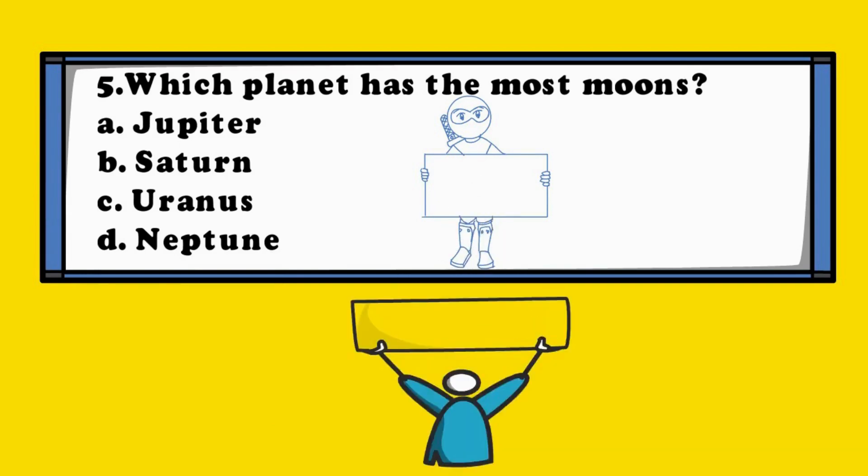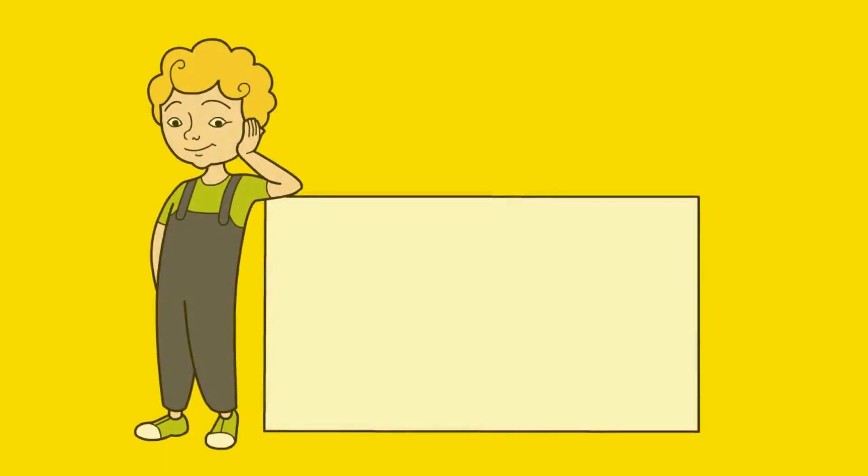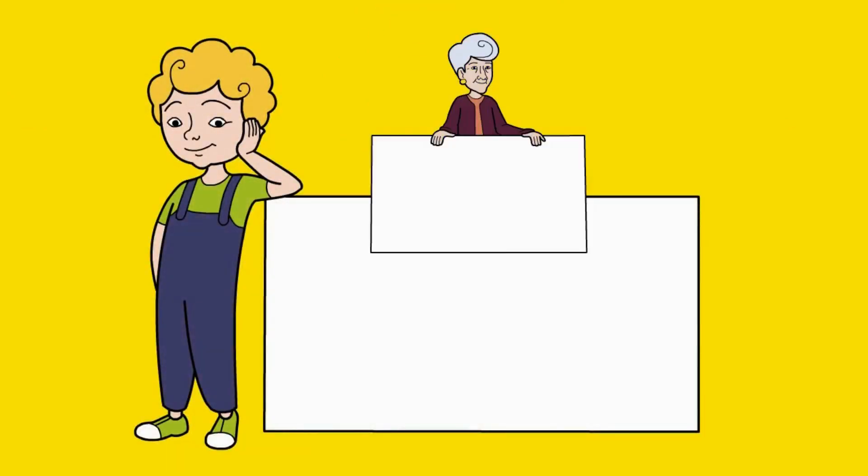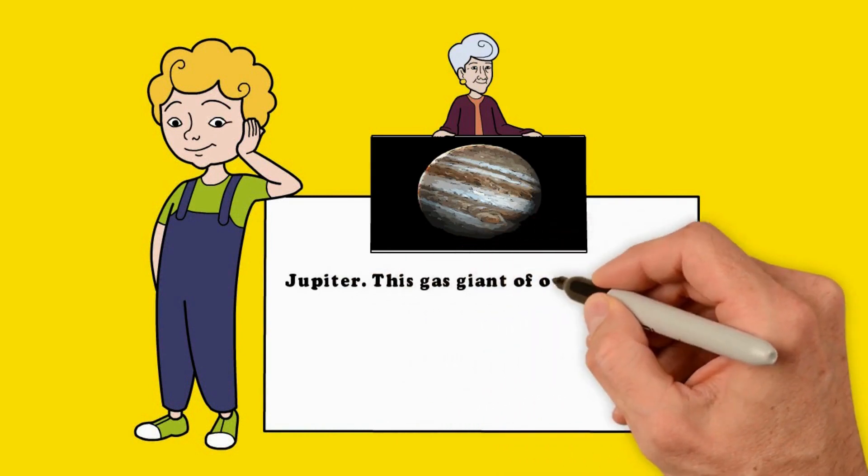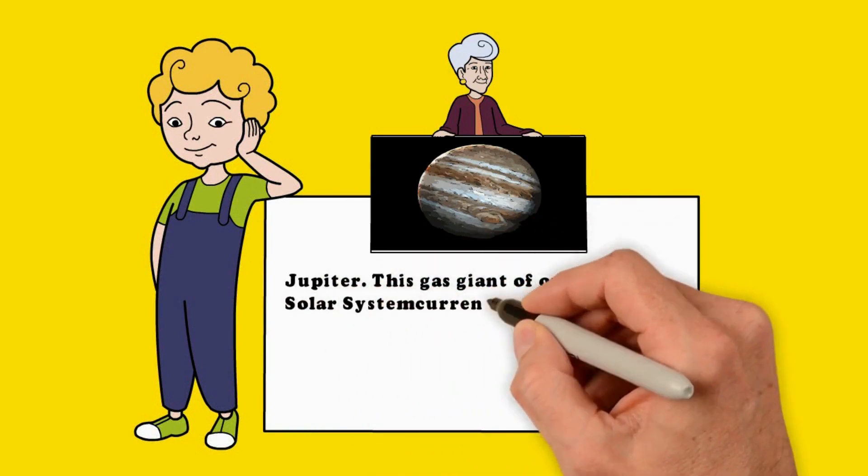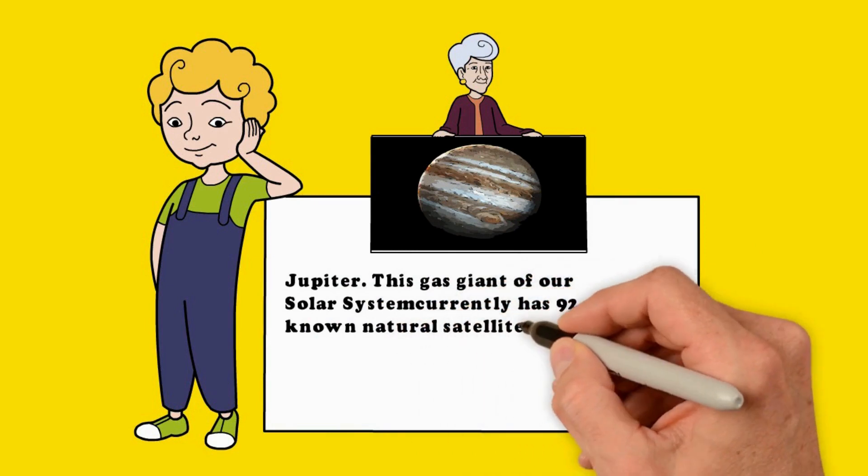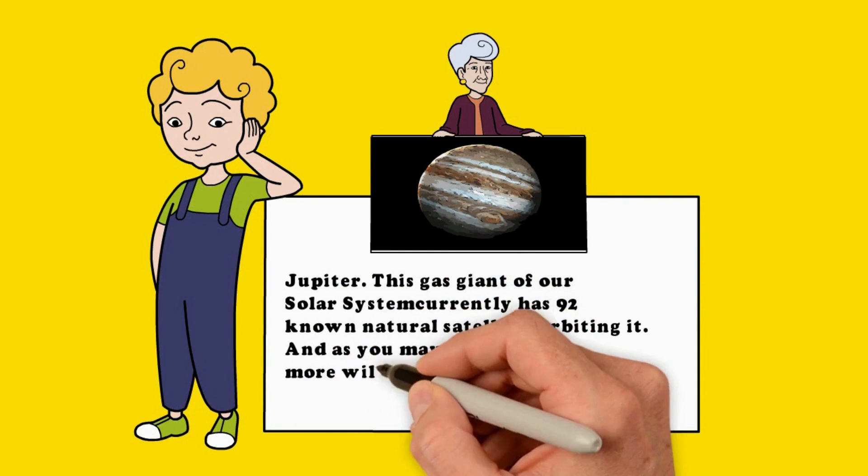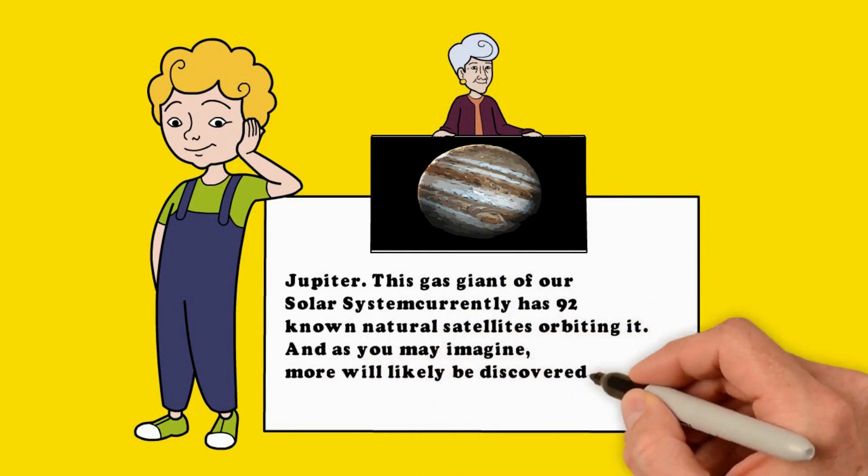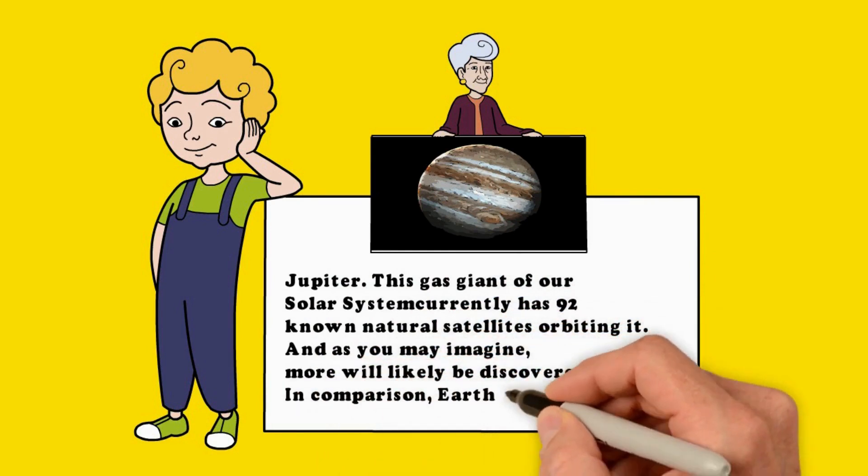The answer is A. Jupiter. This gas giant of our solar system currently has 92 known natural satellites orbiting it. And as you may imagine, more will likely be discovered. In comparison, Earth only has one moon.